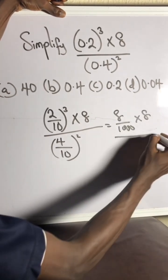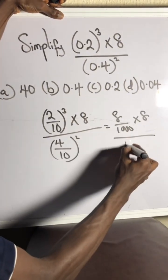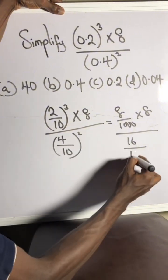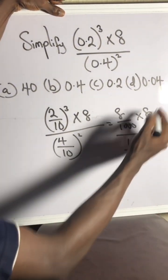Times 8 over 4 squared is 16 over 10 squared is actually 100. You feel me? Now listen up.